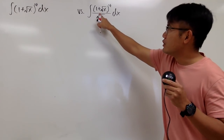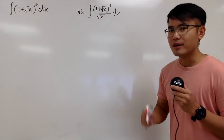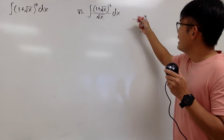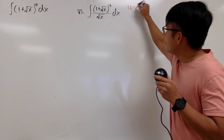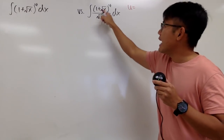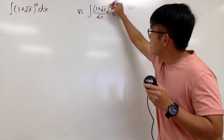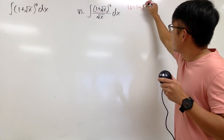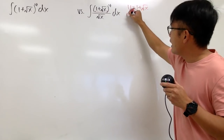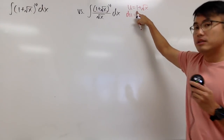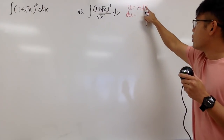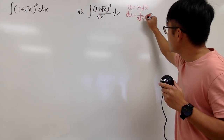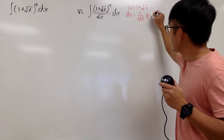You will see this additional square root of x in the denominator is actually going to help us out nicely. I will begin by letting u equal the inside, namely 1 plus square root of x. Differentiating, I get du equals the derivative of 1, which is 0, plus the derivative of square root of x, which is 1 over 2 square root of x, times dx.